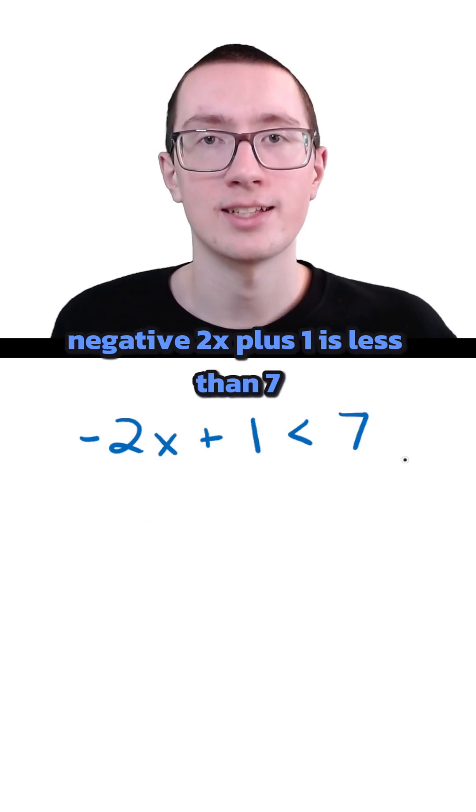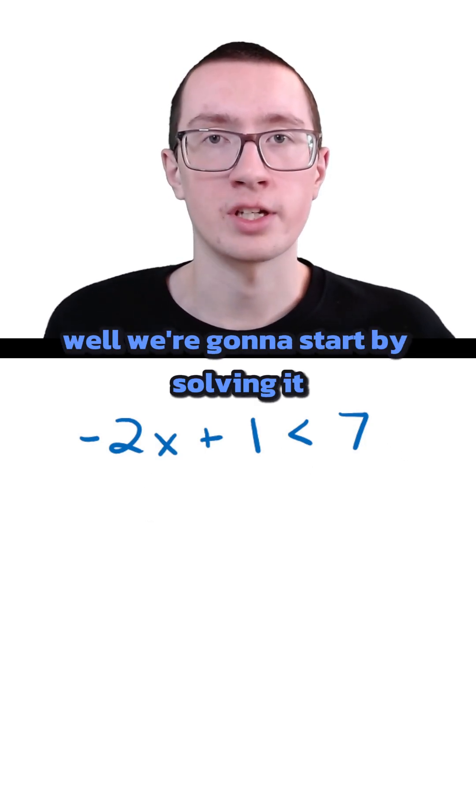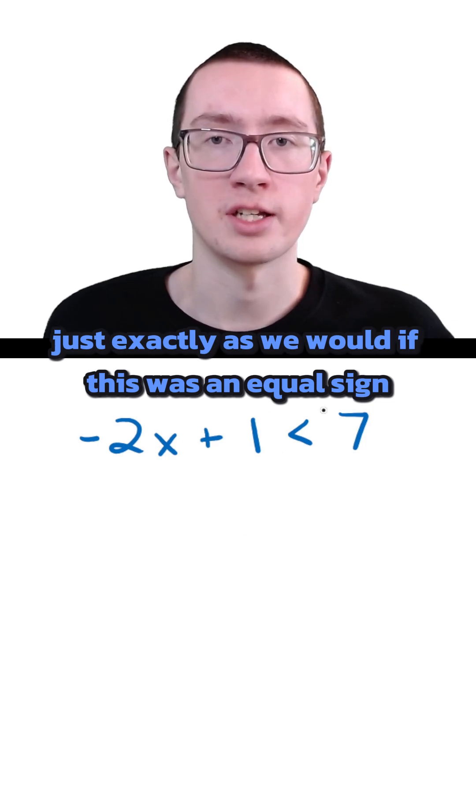We're going to solve the inequality negative 2x plus 1 is less than 7. We're going to start by solving it just exactly as we would if this was an equal sign.